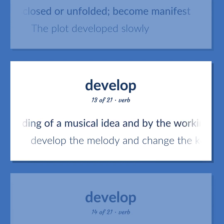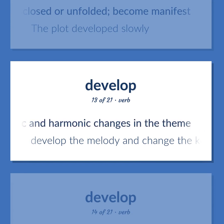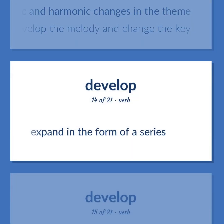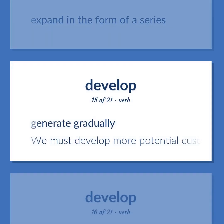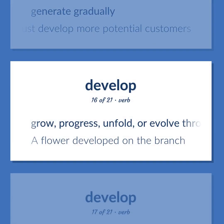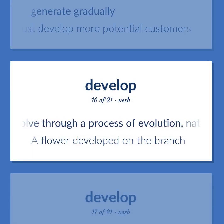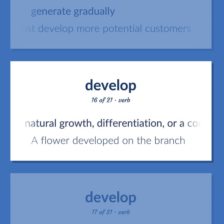Elaborate by the unfolding of a musical idea and by the working out of the rhythmic and harmonic changes in the theme. Develop the melody and change the key. Expand in the form of a series. Generate gradually. We must develop more potential customers. Grow, progress, unfold, or evolve through a process of evolution, natural growth, differentiation, or a conducive environment. A flower developed on the branch.